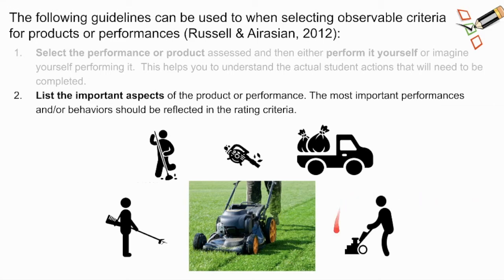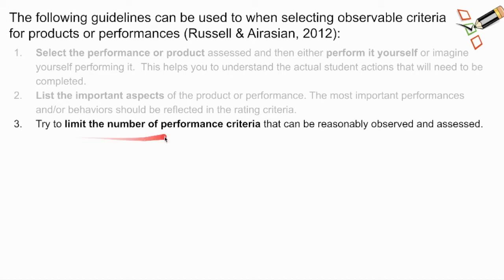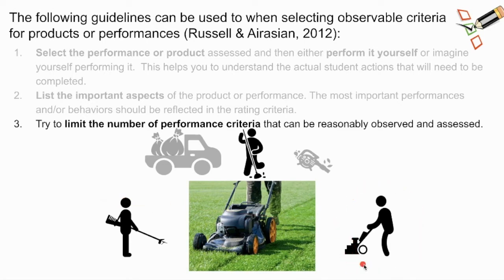For example, I could focus on how the grass needs to be cut evenly, that weed eating needs to be done to ensure the edges of the lawn are even with the grass, and that everything gets cleaned up—piles of grass raked up, the sidewalk swept, and all grass clippings bagged and taken to the dump. But it's important to limit the number of performance criteria that can reasonably be observed and assessed. In an effort to not overwhelm my sons, I might just focus on three criteria: cutting the grass, weed eating, and cleanup.